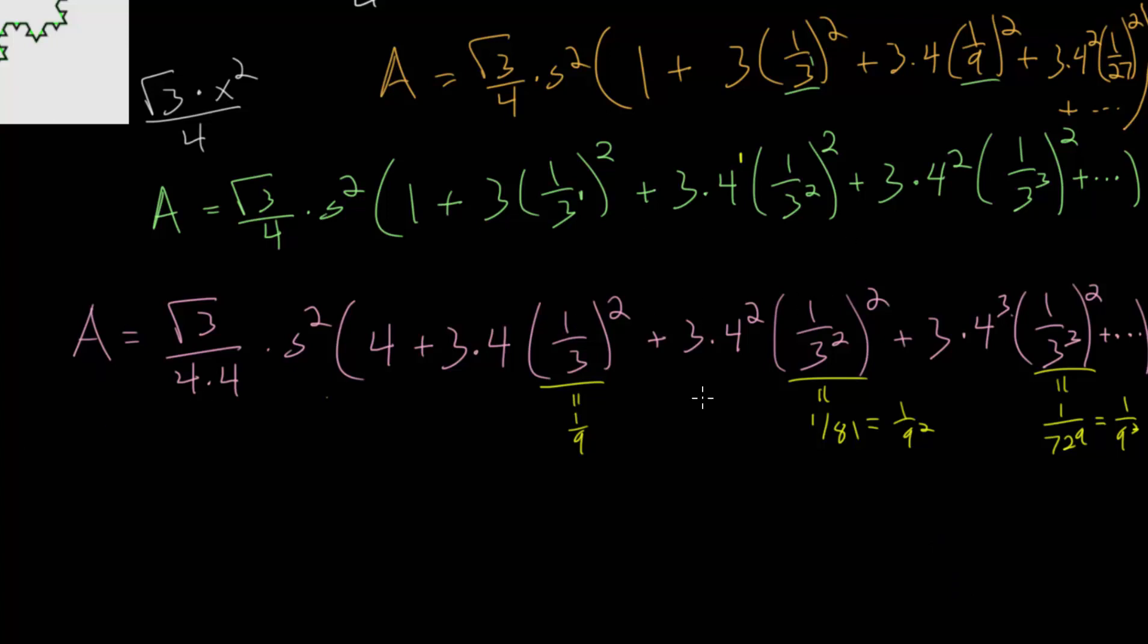So let's rewrite our formula with these simplifications. And I've simplified this 4 times 4 in the denominator to be 16, and we've replaced all of these squared expressions with their different powers of 9 in the denominator. We have 1 ninth here,